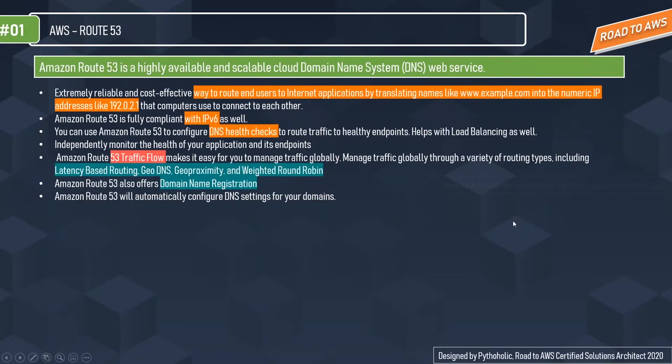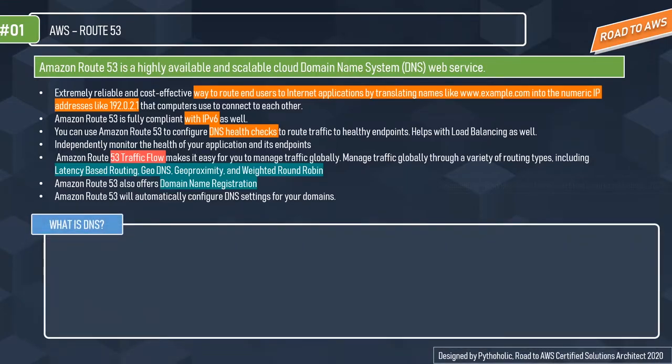Amazon Route 53 is a highly available and scalable cloud Domain Name System, or DNS, web service. Let's first understand what DNS is before getting into the details of Route 53. When you hit a URL, there is some sort of magic that makes the website appear on your browser, and that magic is brought to you by DNS.